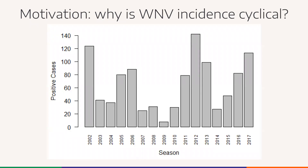The motivation for this work is that West Nile virus incidence goes through peaks and troughs. In 2002, 2012, and 2017 there was an abundance of West Nile virus positive cases, whereas in years like 2009 there was much less. We want to see if environmental covariates can explain these changes in West Nile virus year over year.